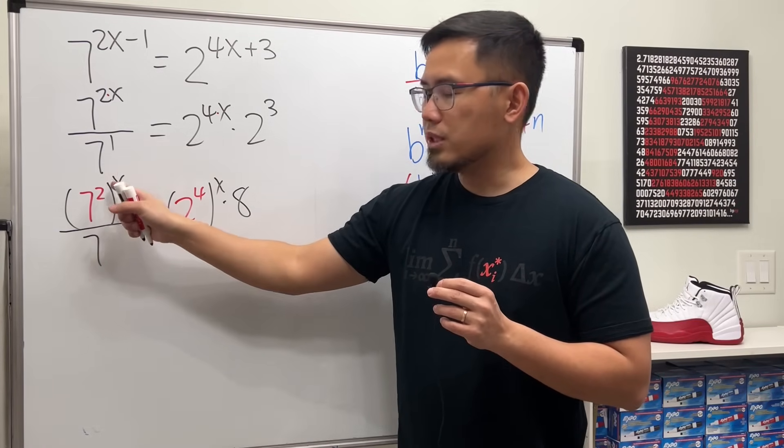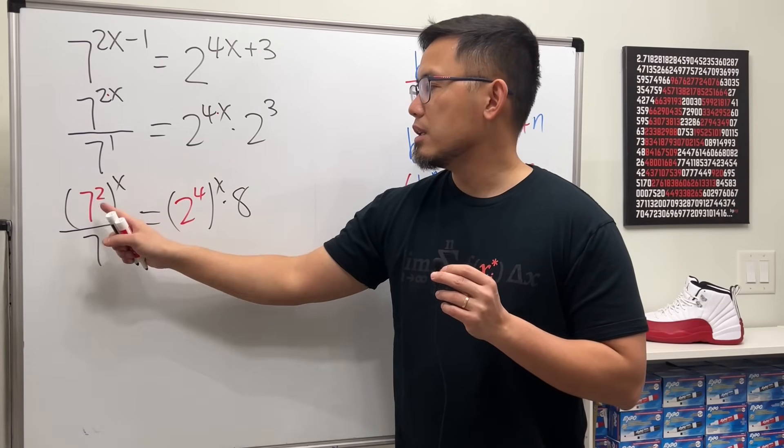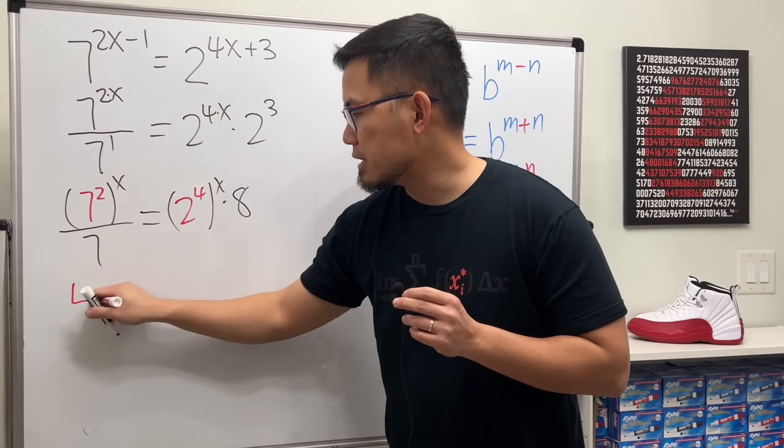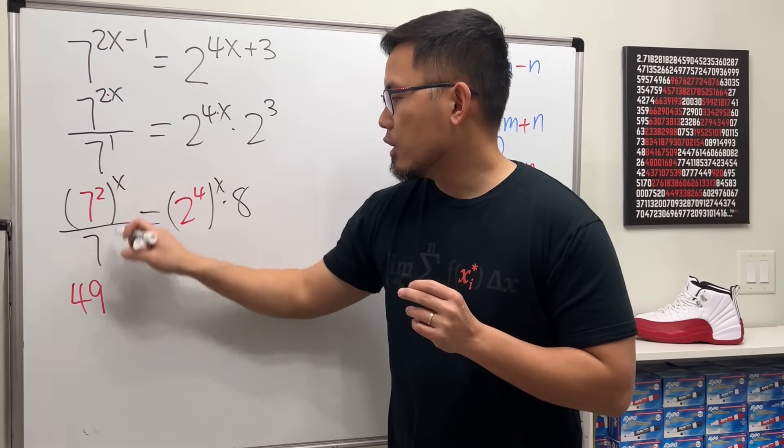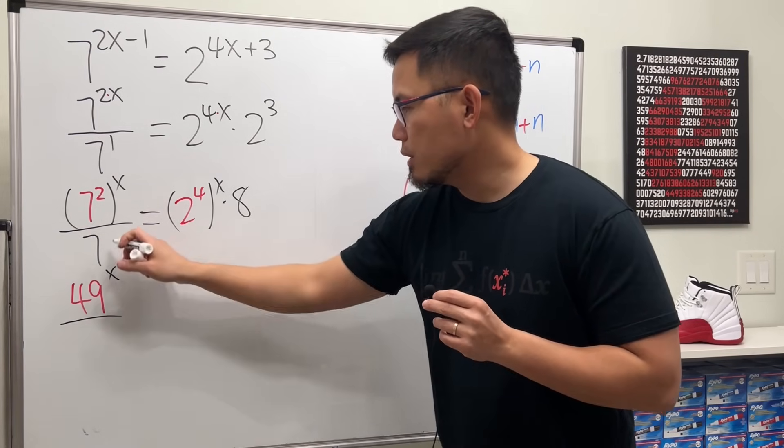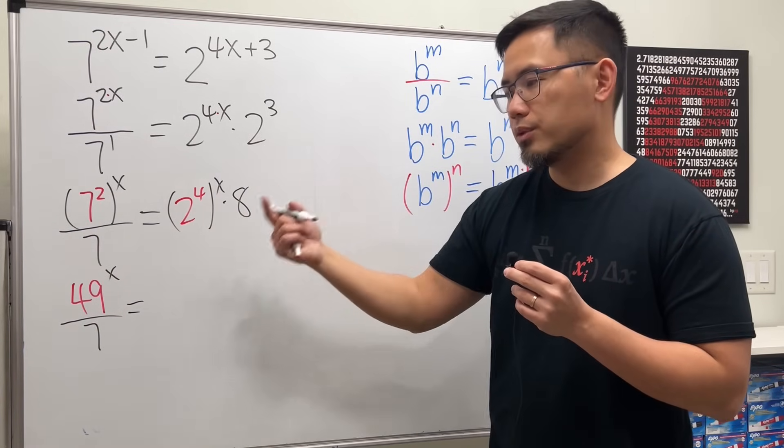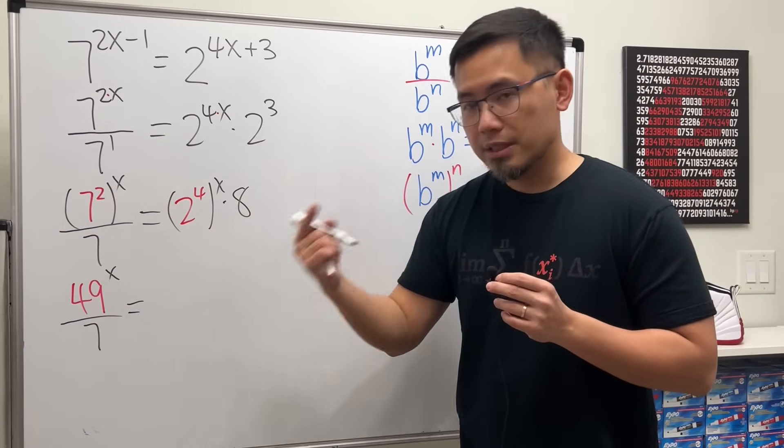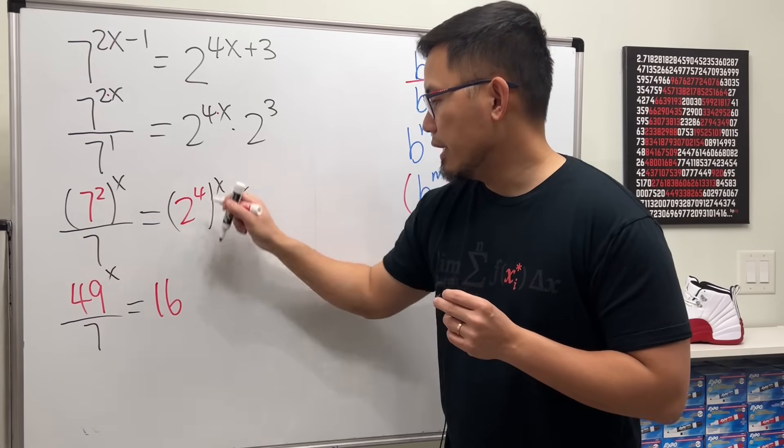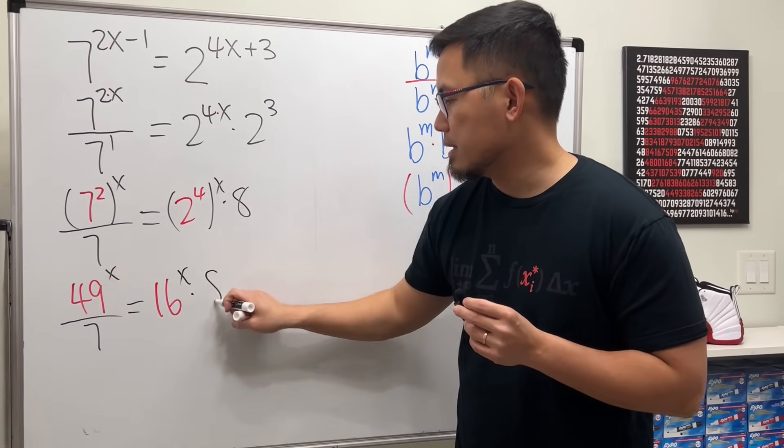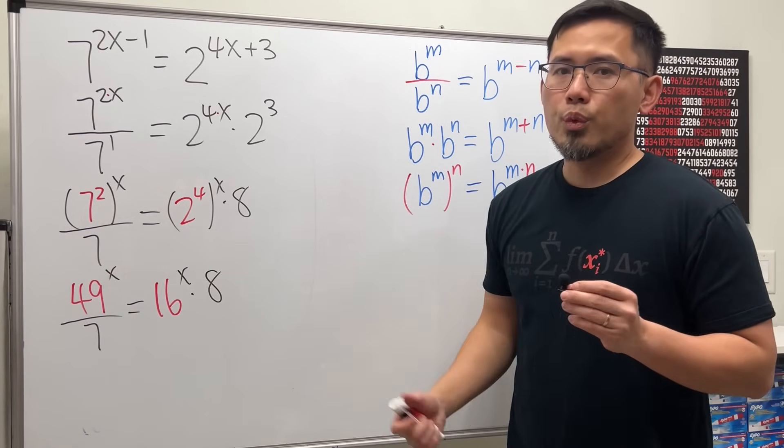And the reason we choose to do this first is because we can work this out. 7 squared is 7 times 7. That's 49 raised to the x power over 7. That's equal to 2 to the 4th. 2 times 2 times 2 times 2. 16. To the x power, and then times 8. Now, we are ready to go.